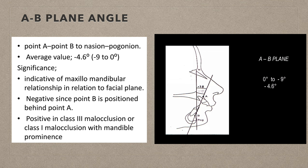The AB plane angle uses A-point and B-point — the angle between the facial plane (nasion-Pogonion) and the AB plane. This shows the maxillomandibular relationship in relation to the facial plane. When B-point is positioned behind A-point, it is a negative angle, meaning a retrusive mandible compared to the facial plane.